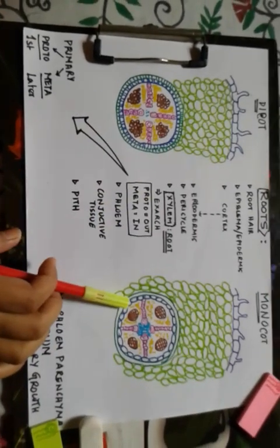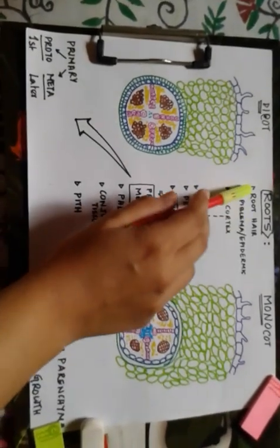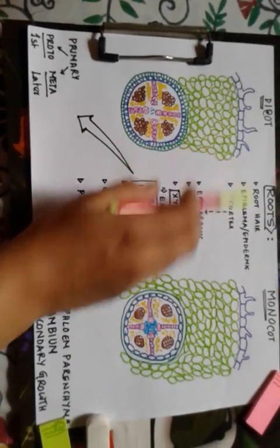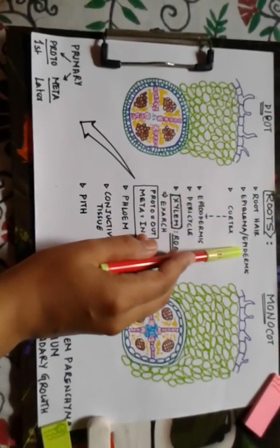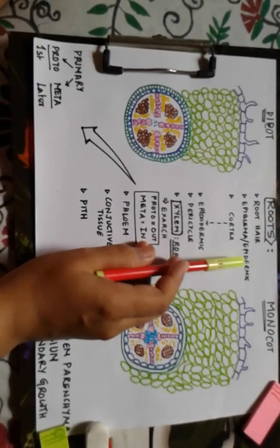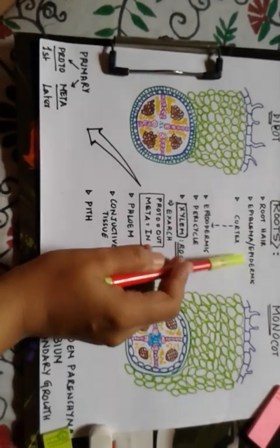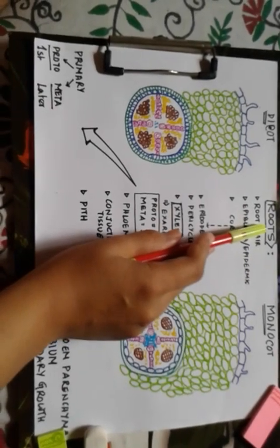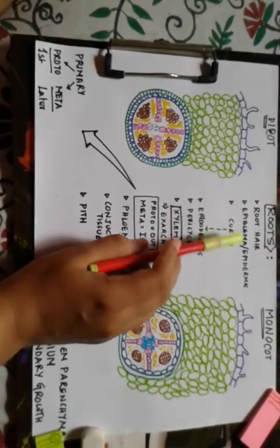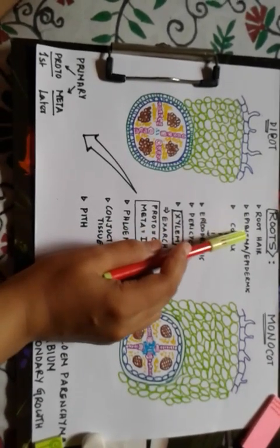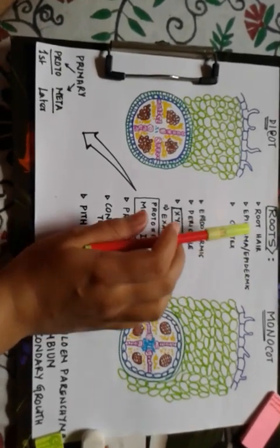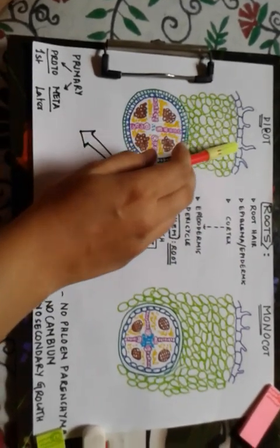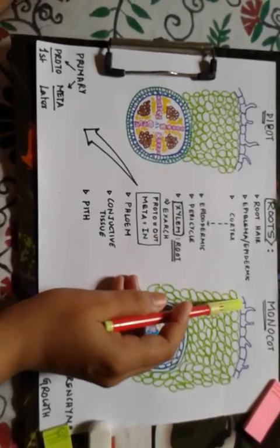This is the dicot root and this is the monocot root. Starting from the beginning — both have root hairs, so there's no significant difference there. Next we go to the epiblema or epidermis. Many books won't mention the word epidermis for roots because the epidermis of roots is specifically called epiblema, which is the correct term — though epidermis is also acceptable.